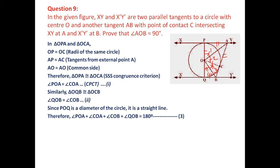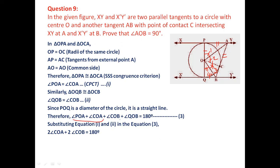Since angles 1 and 2 are equal, and 3 and 4 are equal: 2×COA + 2×COB = 180°, so COA + COB = 90°. Since COA + COB = AOB, angle AOB = 90 degrees. Proved.